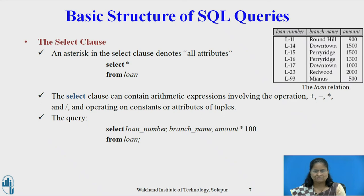The asterisk symbol (*) can be used to denote all attributes. A SELECT clause of the form SELECT * indicates that all attributes of all relations appearing in the FROM clause are selected. SQL command: SELECT * FROM LOAN.